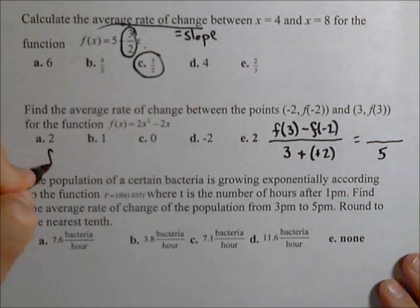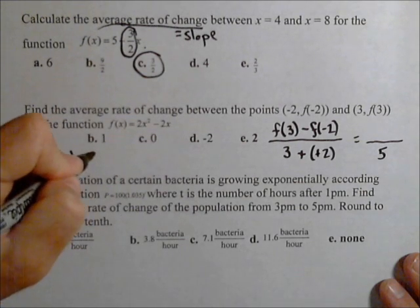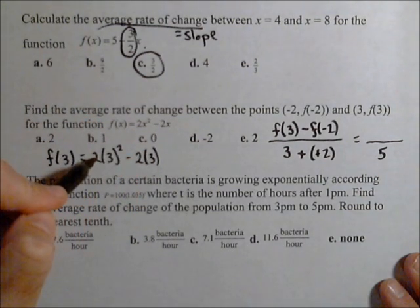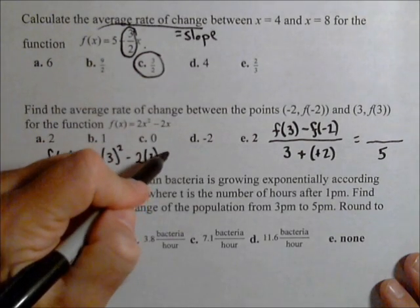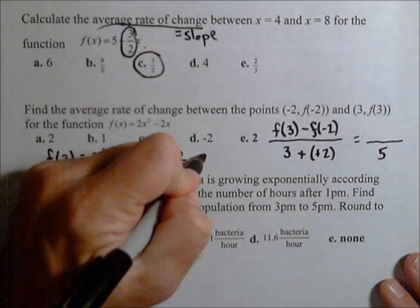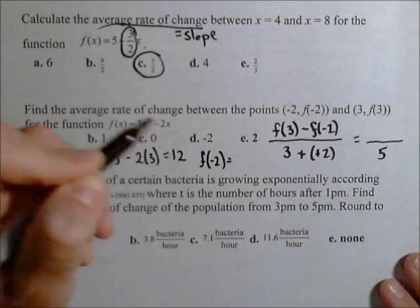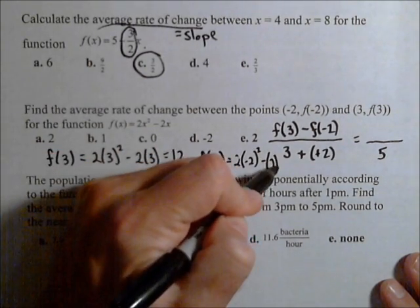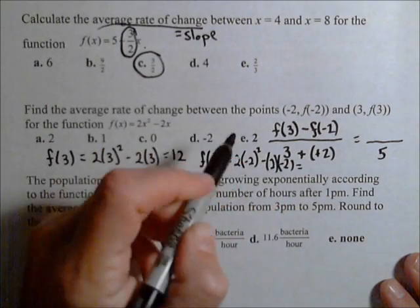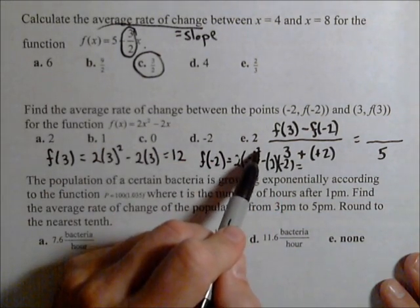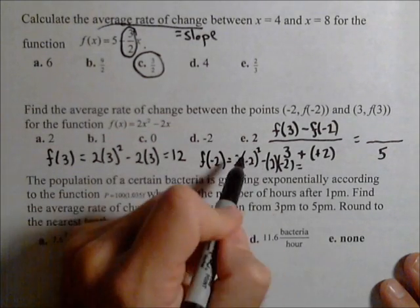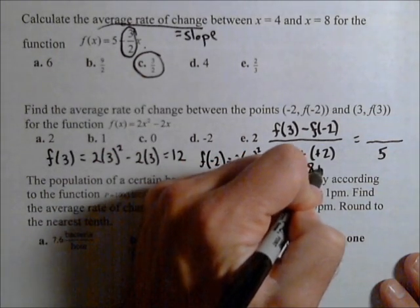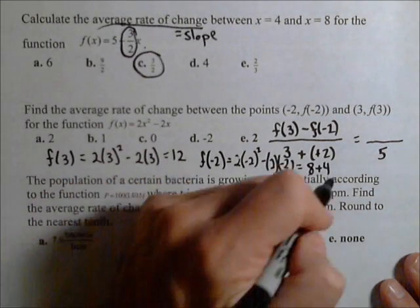So we have to use our function to calculate f(3), which is 2(3²) - 2(3). Three squared is 9, times 2 is 18, minus 6 is 12. And we also need f(-2). So we have 2(-2)² - 2(-2). Negative two squared is 4, times 2 is 8. And then we have -2 times 2 is -4, so minus a negative 4, so plus 4. And so that's 12.